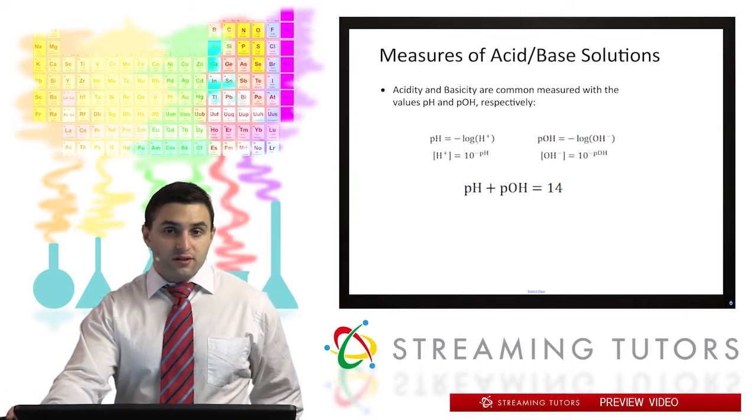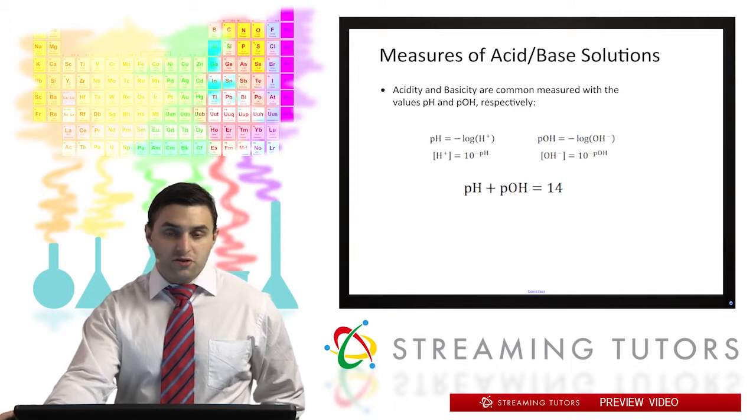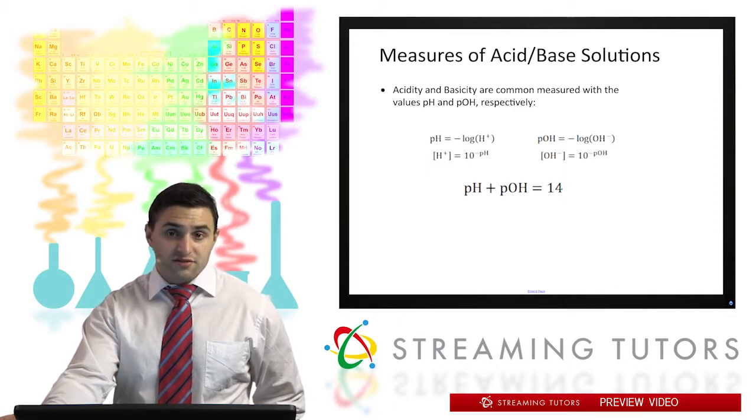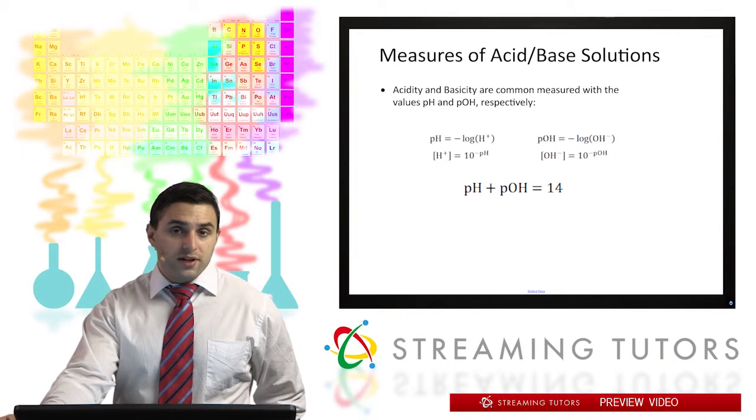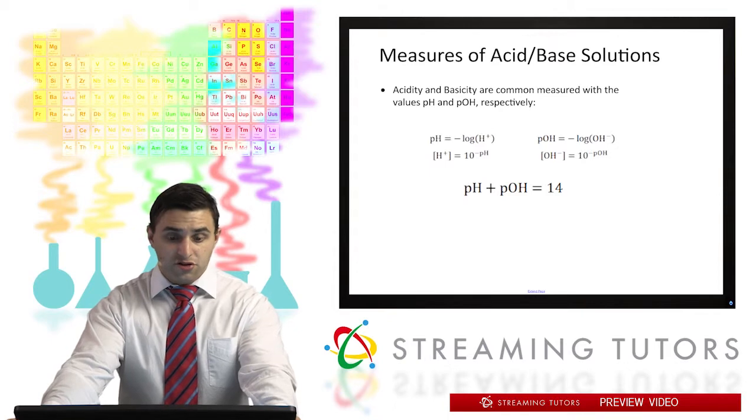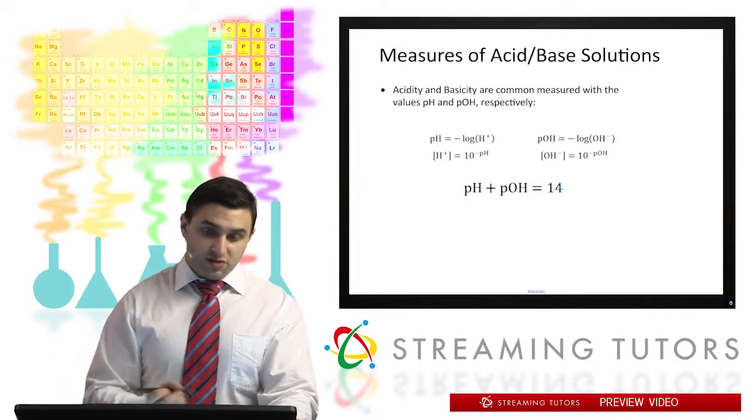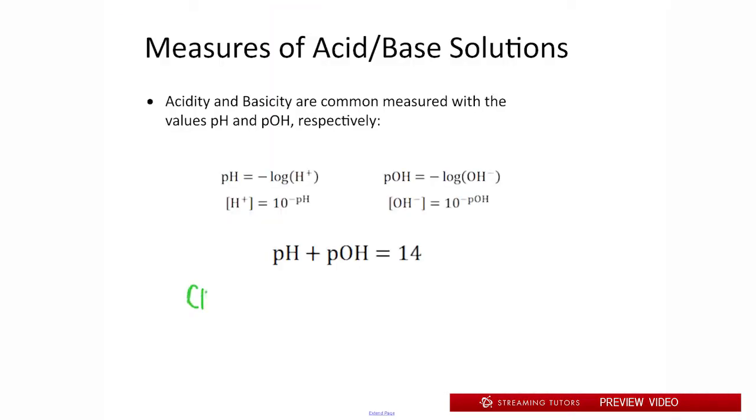Another way we can look at that is through the logarithmic system known as pH and pOH. If we take the concentration of H+ or OH- and take what's known as the p, or the negative log, of each concentration, we get a new value that we can use to measure the acidity or basicity of the solution. You'll see that pH equals the negative log of H+. So if we had something like H+ equal to 1 times 10 to the negative 5th, pH would just be the negative log of that number, which would equal 5.